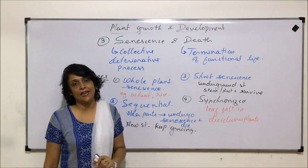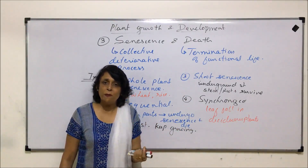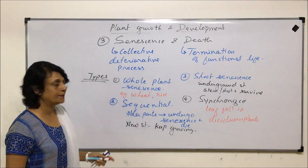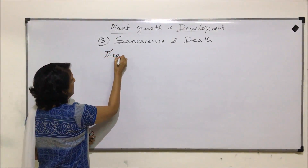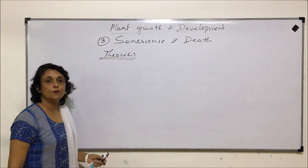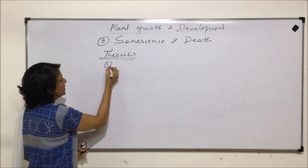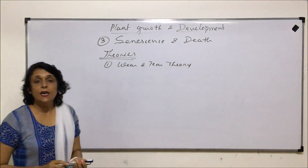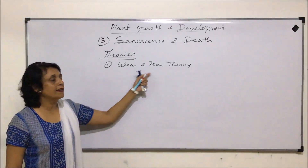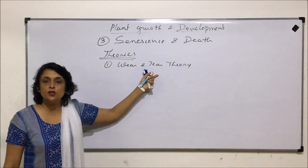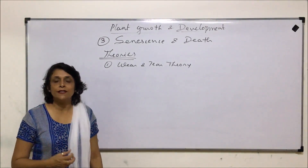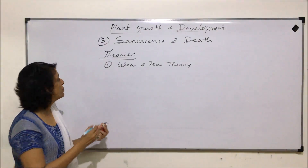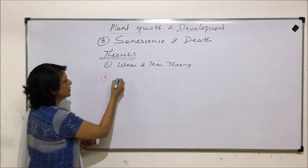Those are the four main types of senescence. Now let us see why senescence takes place — there are theories which explain the reasons for this aging process. The first is known as the wear and tear theory. According to this theory, during the lifespan of a plant, certain systems and tissues undergo wear and tear, and those damages accumulate, resulting in the aging process or senescence.